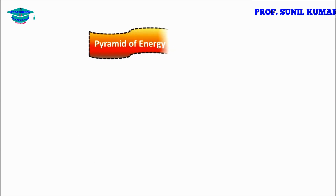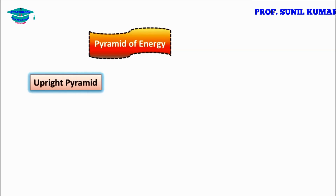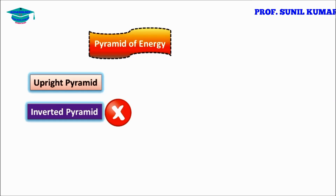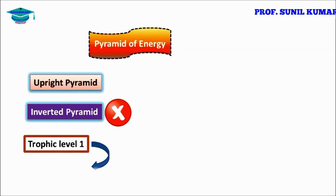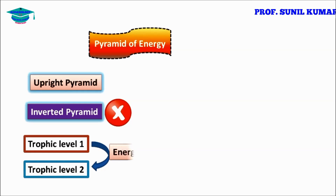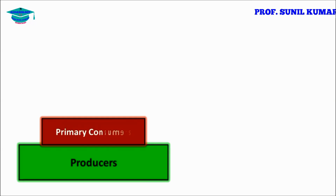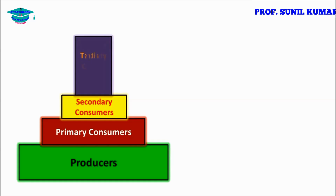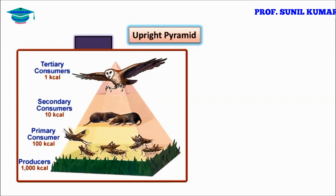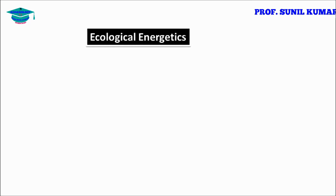The pyramid of energy is always upright — it can never be an inverted pyramid. Energy is transferred from the first trophic level to the next. From producers to primary consumers, then secondary, then tertiary — it's an upright pyramid where producers have the most energy and tertiary consumers have the least.